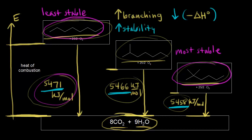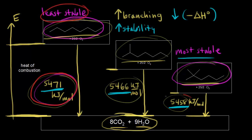It's important to be able to analyze heat of combustion data. Just remember: the lower the energy, the more stable the compound. The compound with the highest heat of combustion was the least stable, and the compound with the lowest heat of combustion was the most stable. So branched alkanes are lower in energy, or more stable, than straight chain alkanes.